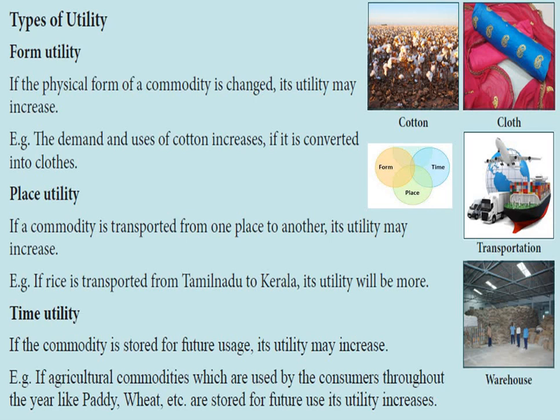When utility increases, definitely the cost will also increase. Raw cotton is cheaper compared to the finished good, that is cloth. Similarly, rice in Tamil Nadu is cheaper when you compare it with Kerala. When rice is stored, its value increases — one-year-old rice will fetch more price than fresh rice.